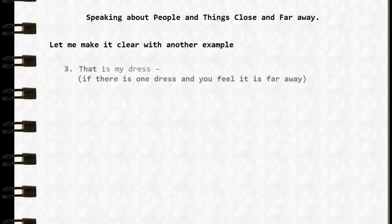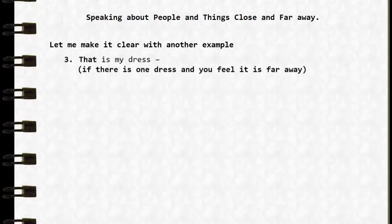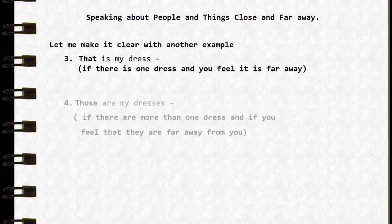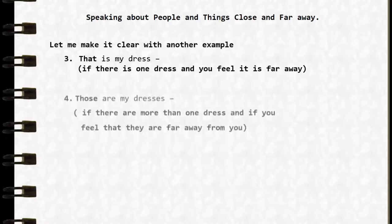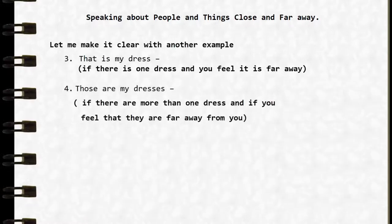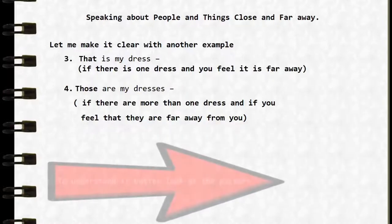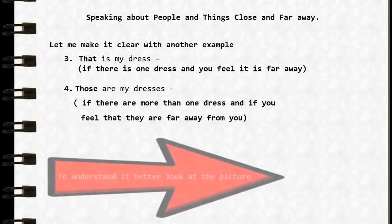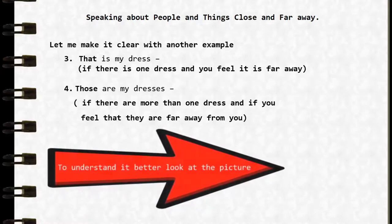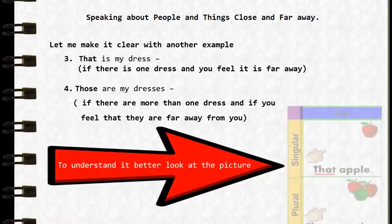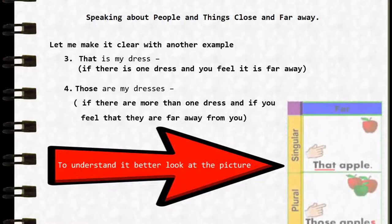'That is my dress' — if there is one dress and you feel it is far away. 'Those are my dresses' — if there is more than one dress and you feel they are far away from you. To understand it better, look at the picture: 'that apple' — 'those apples'.